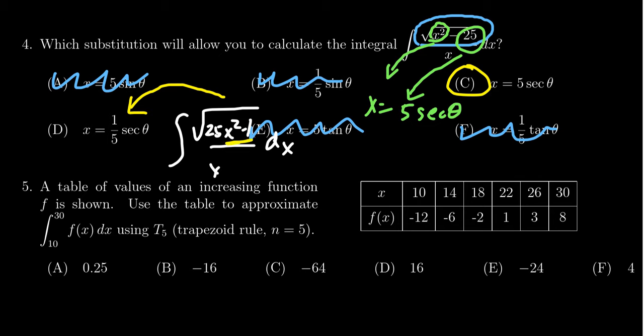In this situation, we'd gravitate toward x = (1/5)sec(θ) because it's still a difference of squares where the variable comes first, giving us a secant substitution. But taking the square root of the first term gives 5x, and the second gives 1.